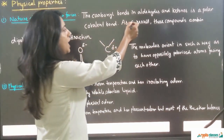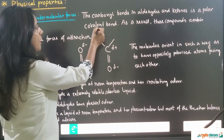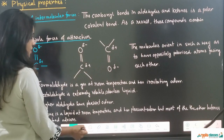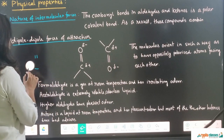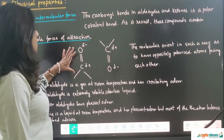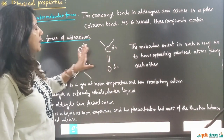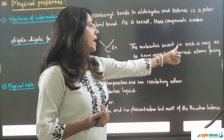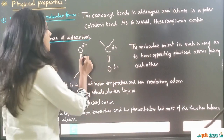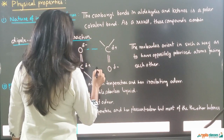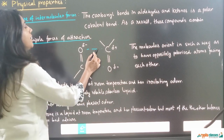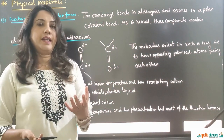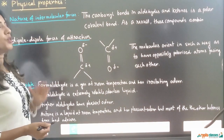The carbonyl bond in aldehydes and ketones is a polar covalent bond. As a result, these compounds contain dipole-dipole forces of attraction. The molecules orient themselves in such a way that oppositely polarized atoms face each other, giving rise to dipole-dipole interaction. So because the C=O bond is a polar bond, there is dipole-dipole interaction in aldehyde and ketone molecules. This completes the nature of intermolecular forces.